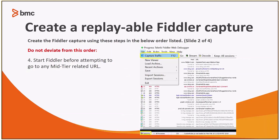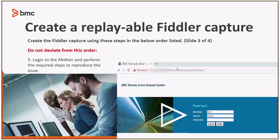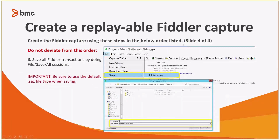You'll open Fiddler and double check that it is set to capture traffic. You can tell by the checkbox and also the capturing indicator at the bottom. Once you have verified that Fiddler is capturing the traffic, you're going to go ahead and log on to your mid-tier and reproduce the problem at hand. You'll log in and reproduce the actions, whether it's a caught exception or browser rendering issue. Once you have captured the steps, you'll go ahead and save the Fiddler capture.